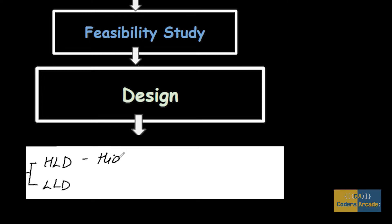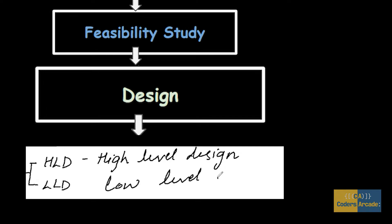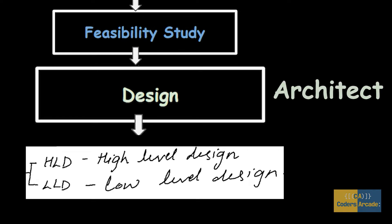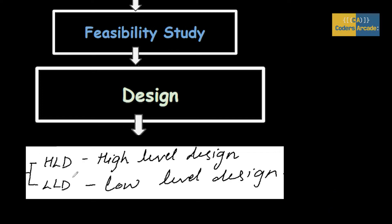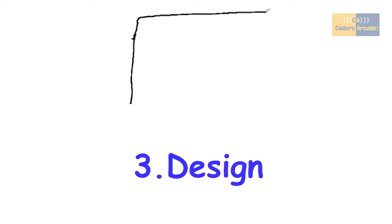HLD is High Level Design and LLD is Low Level Design. This will be done by Architects. For High Level Design, let me give you an example. Let's say you want to construct your house — you will have one blueprint. You'll note the square footage of the site.